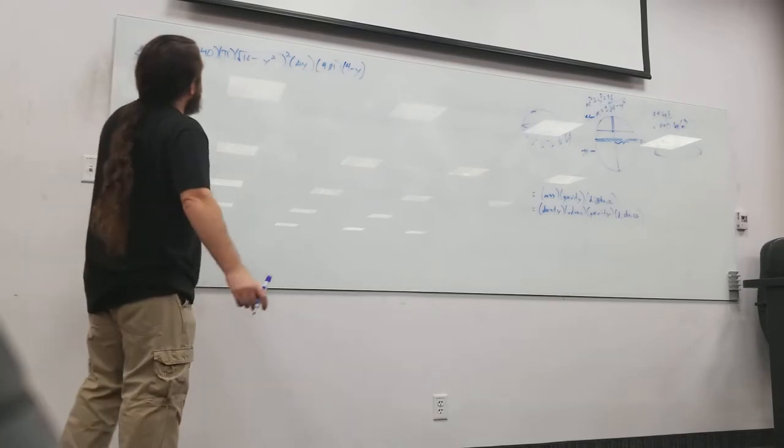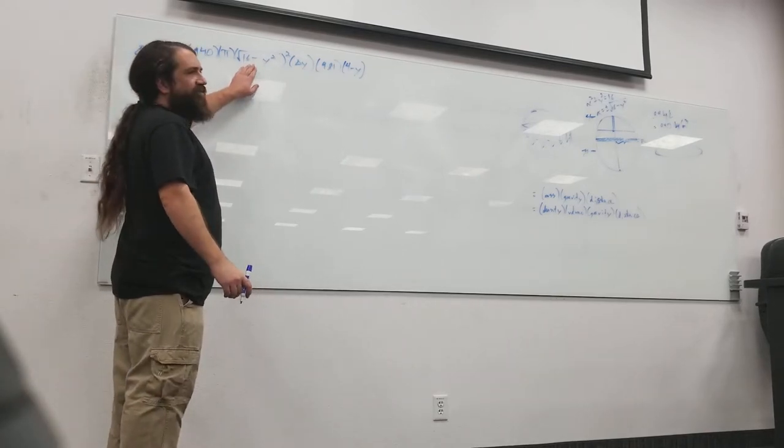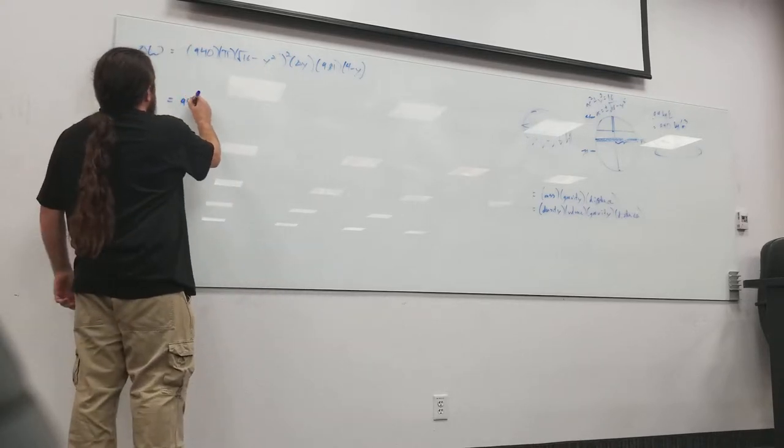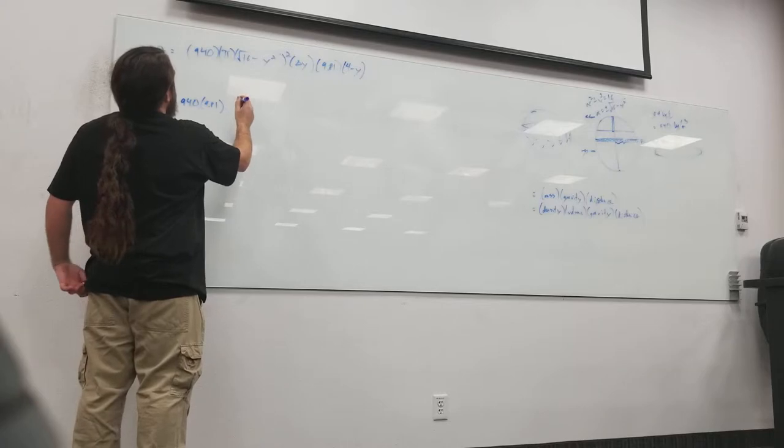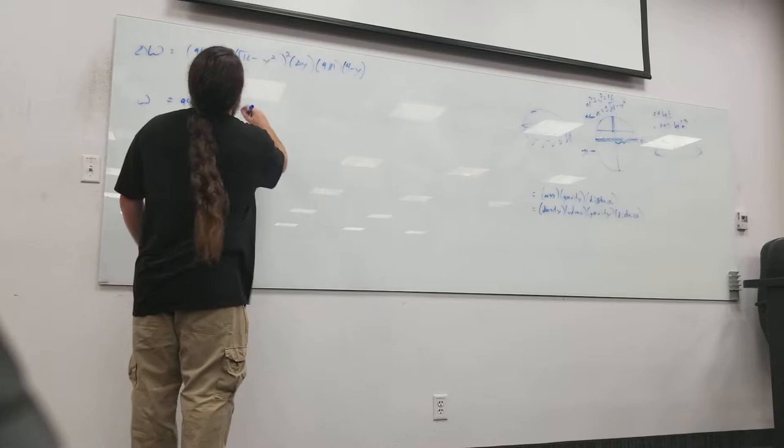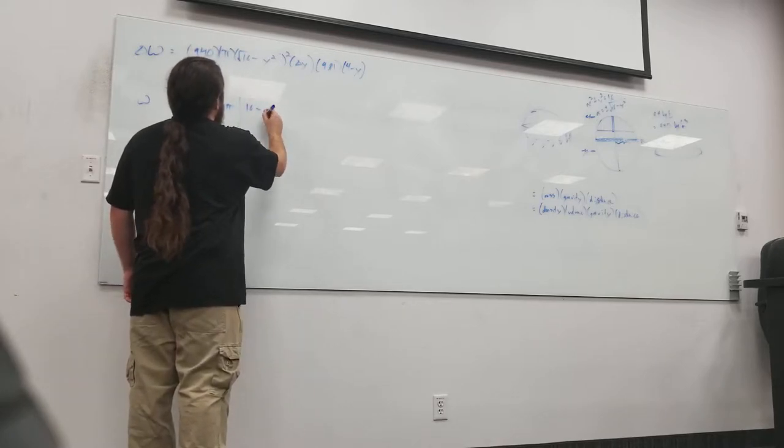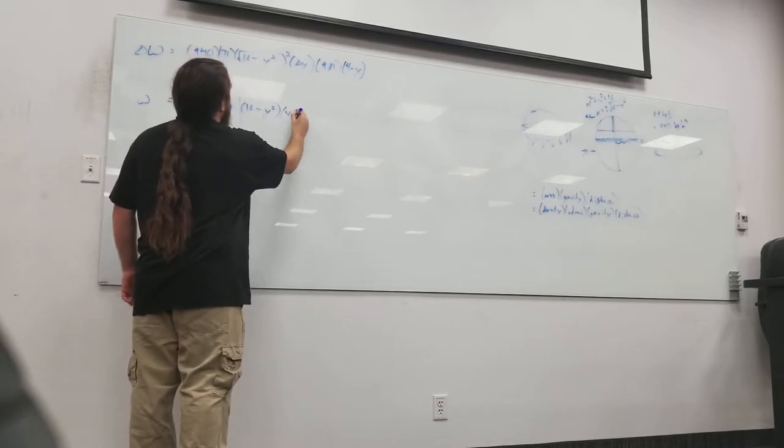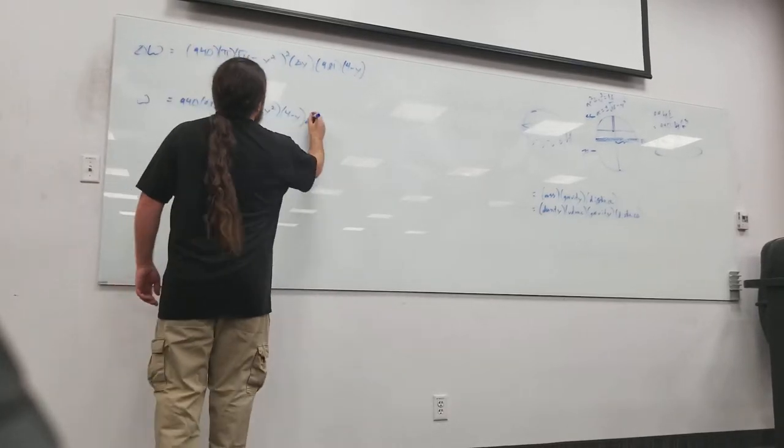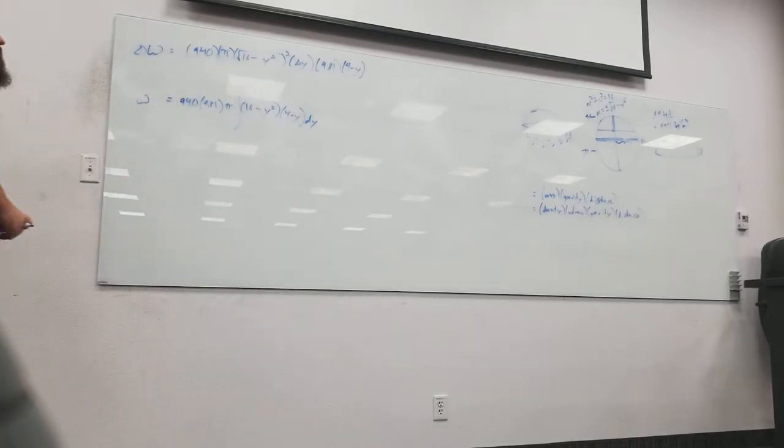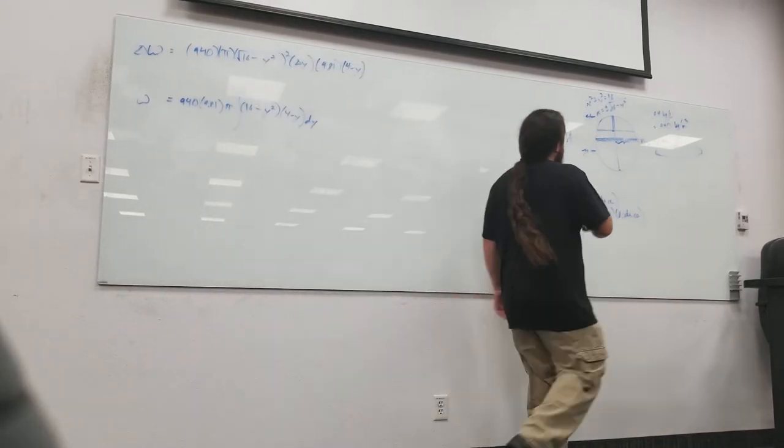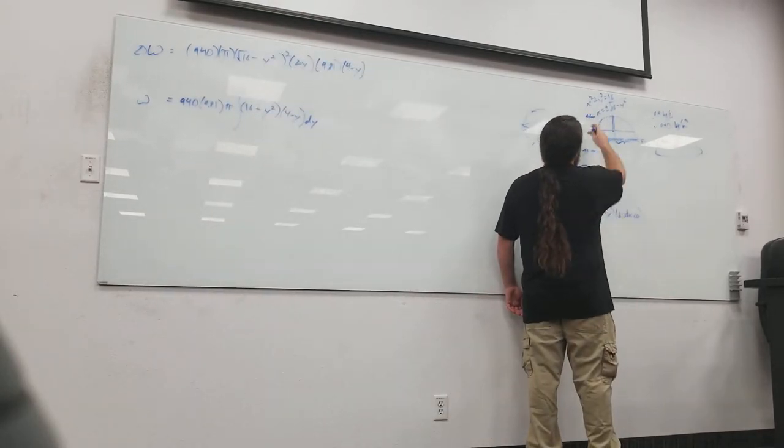Okay, now the good news is you don't have to deal with the square root inside of a quadratic because pi r squared kills off the square root. I'm going to take out the 940 and the 9.81 and the pi, and what I've got is the integral of 16 minus y squared times 4 minus y. What do my limits of integration look like? It was negative 4 to 2.